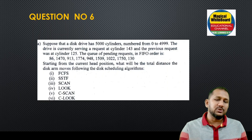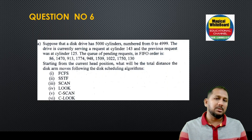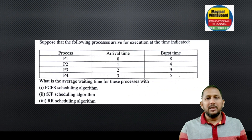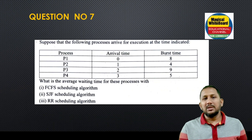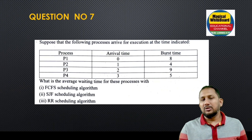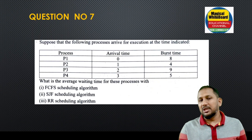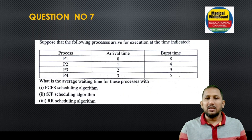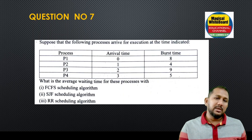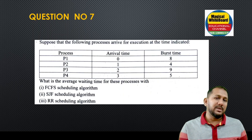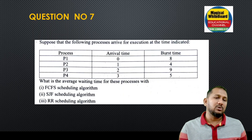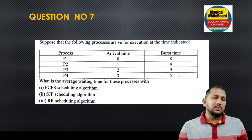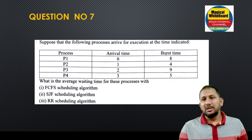We will have to solve this problem. Question number seven: process scheduling. The question asks to calculate the average waiting time. Algorithms include: FCFS, Shortest Job First (SJF), Round Robin, and other process scheduling algorithms.